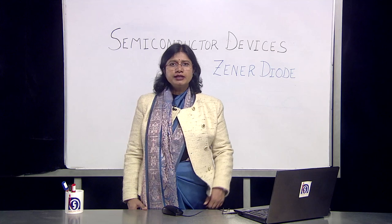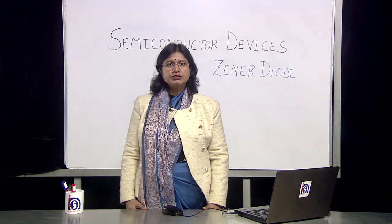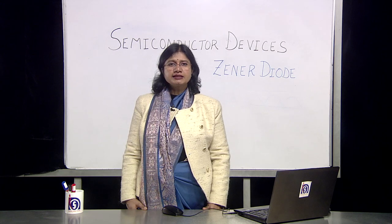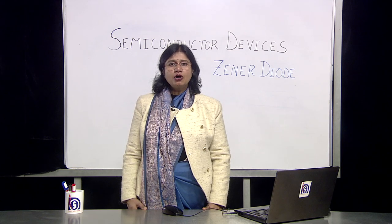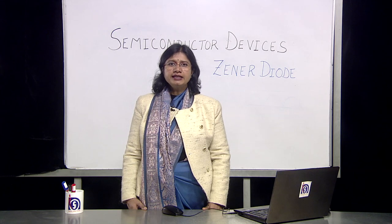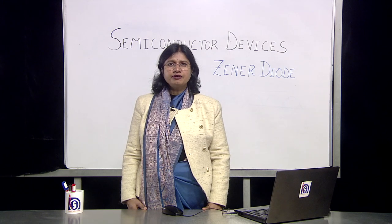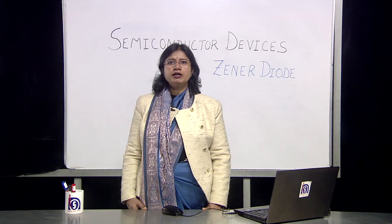A Zener diode is typically a normal diode. The only thing is that it is always used in reverse bias. The limitation of rectifiers is that the output is not very stable. Now this Zener diode provides us a voltage which is very stable. You can draw a large amount of current from a Zener diode without any voltage fluctuations, so a Zener diode is a much better voltage regulator and we are able to get regulated power supply from it.